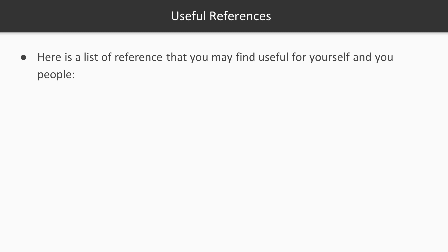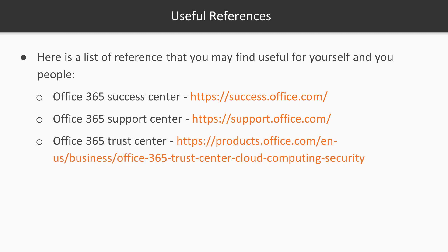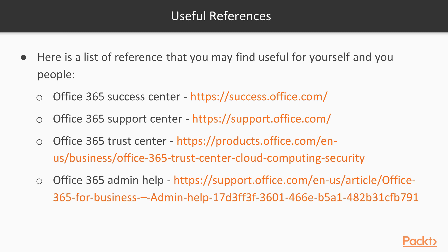On this slide you'll see a list of reference resources that you can go to and find information that will be helpful to you as you go through your new Office 365 administrative journey. The Office 365 success center and support center are those that will help you become successful in deploying Office 365, but also will give you support when you need to ask further questions. The support center is also where you can find information about the different admin centers. In the trust center, you'll find data and information on how Microsoft Office 365 is compliant and can be trusted as a solution for modern businesses.